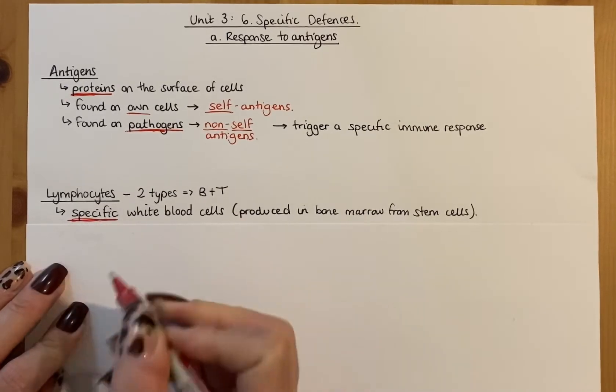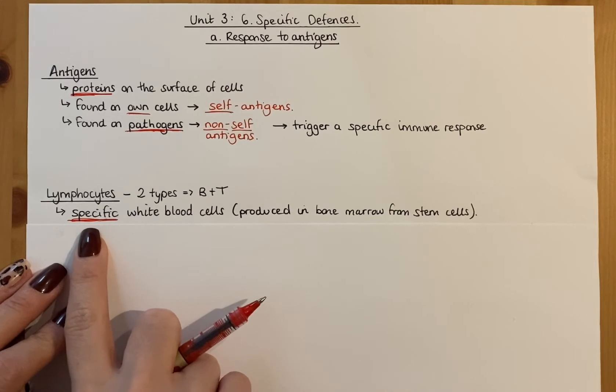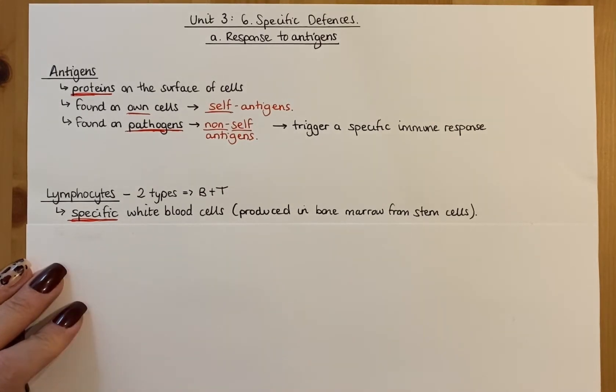It's not like phagocytes from the previous video when phagocytes are non-specific. These are specific white blood cells. They are involved in specific defense. And like before, like all white blood cells, they're produced in the bone marrow from stem cells. So think about the fact that mitosis is occurring within that, and they're unspecialized cells that become specialized.